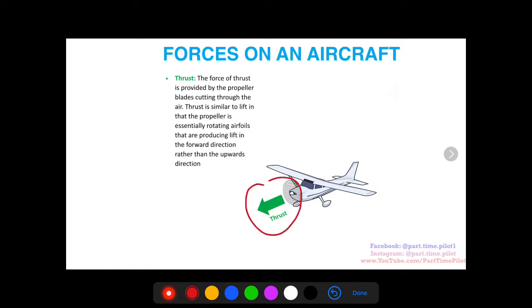So thrust here has a direction going forward on the aircraft, and then it has a magnitude as well. Thrust is the force provided by the propeller blades cutting through the air. It's similar to lift in that the propeller is essentially rotating airfoils that are producing lift in the forward direction rather than the upwards direction.